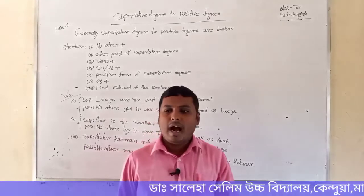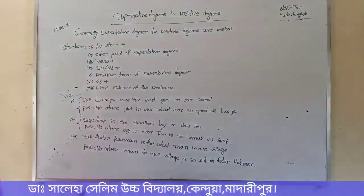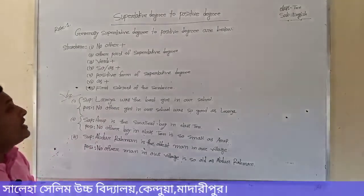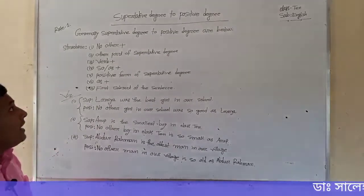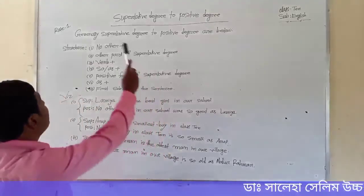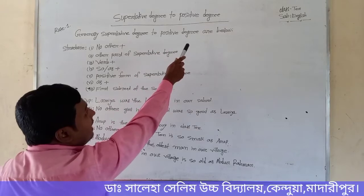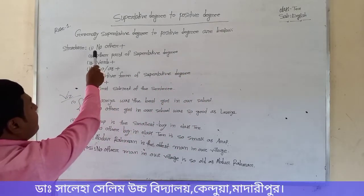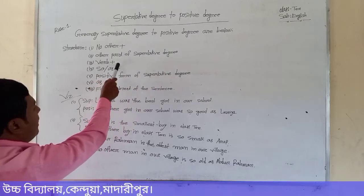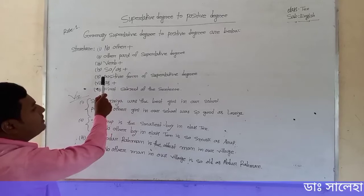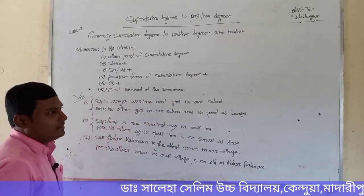How to change superlative to positive degree — have a look. I have written the structure on the board. Please take a pen and write in your khata or notebook. First rule: superlative degree to positive degree. The structure is: No other + [other part of superlative degree] + verb + so/as + [positive form of superlative degree] + as + [first subject of the sentence].